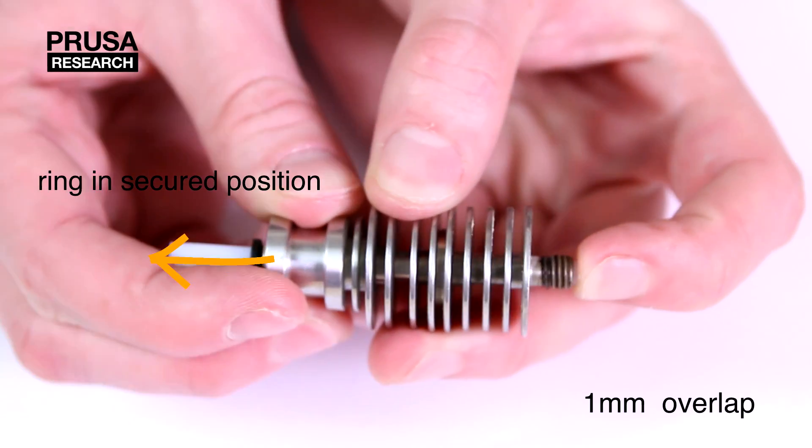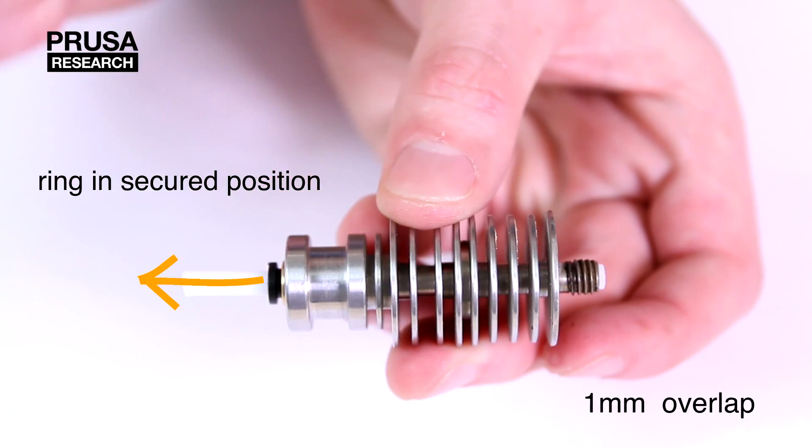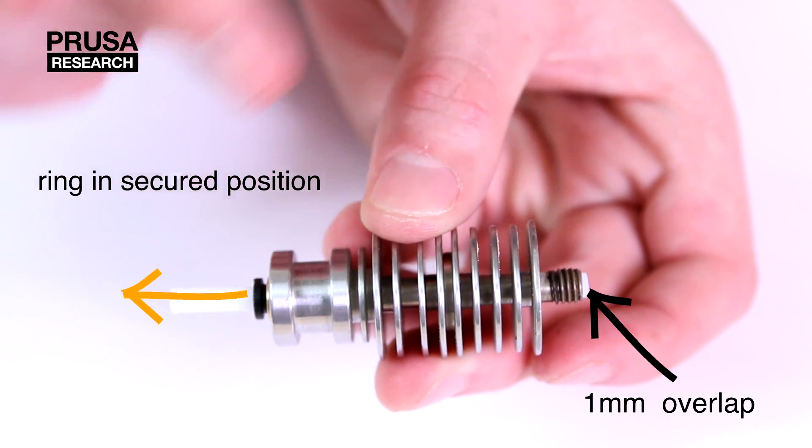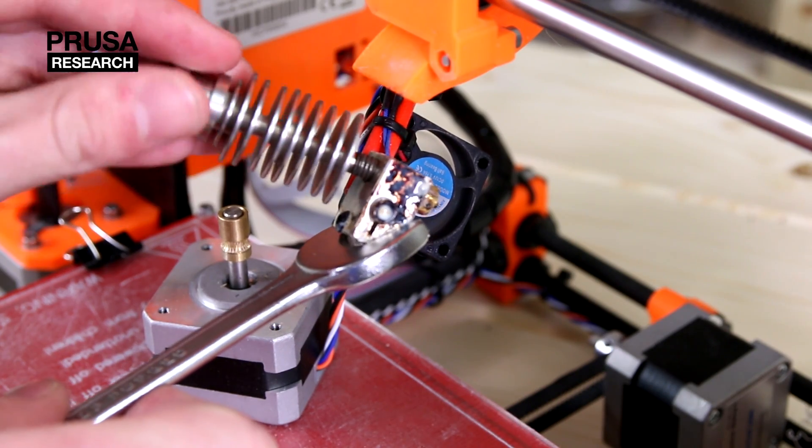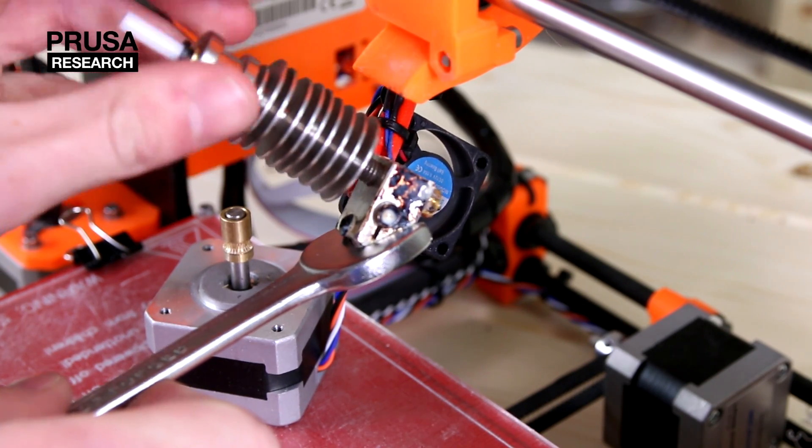After securing the tube with the black ring, the tube should lap over a bit on the other side. Thanks to that the tube will properly adhere after the tightening. We join the body with the heat element again and check if the black ring is secured.